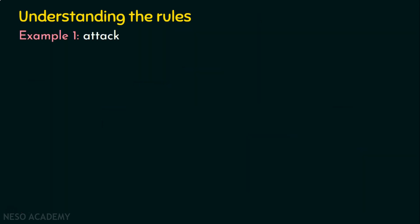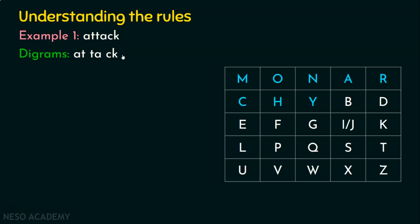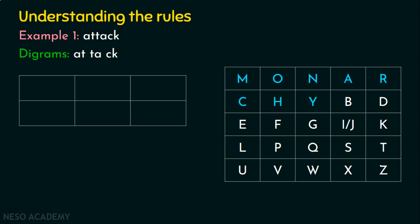Let's take the first example: the word 'attack,' which we saw in the last lecture. The digrams for 'attack' are AT, TA, CK — with no repeating letters. In order to generate the ciphertext, we need the table. The first digram is AT, then TA, then CK. We will encrypt each digram one by one.